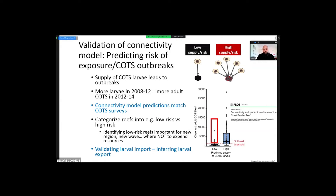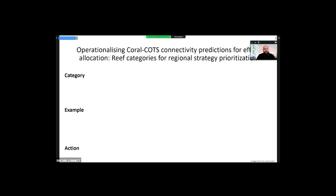We can use the validation of imports to infer that export also works for the models, because export is actually much harder to validate — though some genetic techniques might help with that. Once we have that for both COTS and coral, we can combine these predictions so we have different categories and can then propose different actions.